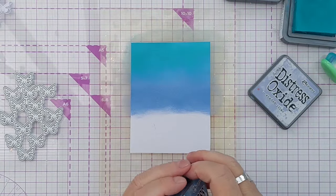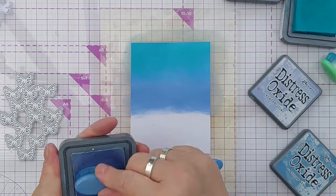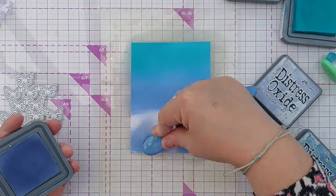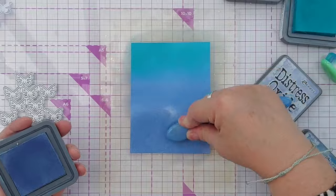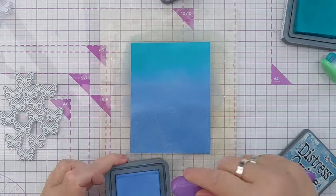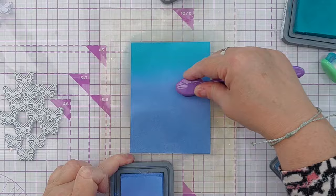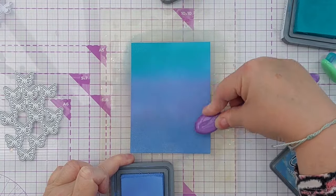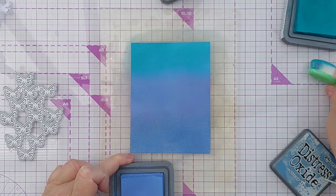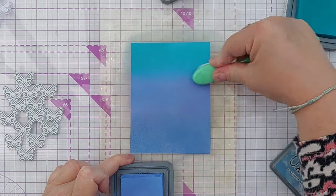And now for some Stormy Sky. I'll just finish off with some Shaded Lilac to blend everything together, maybe a little bit more Broken China up here.